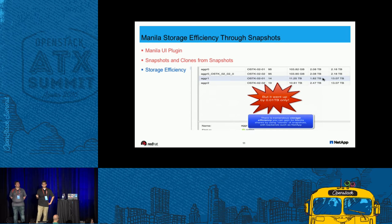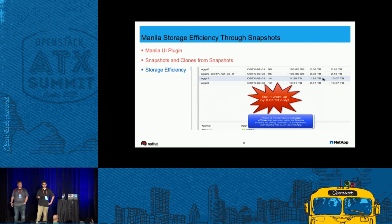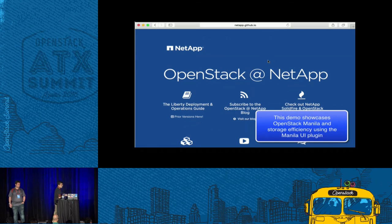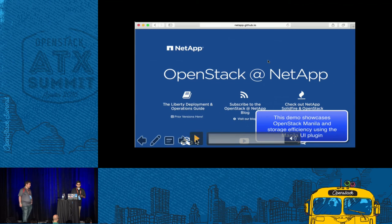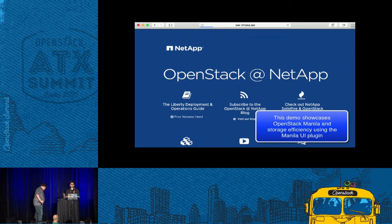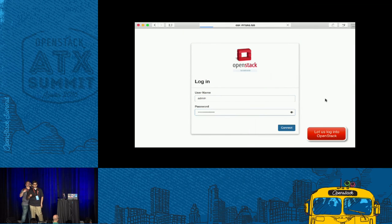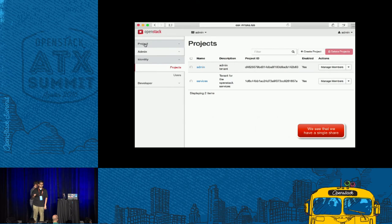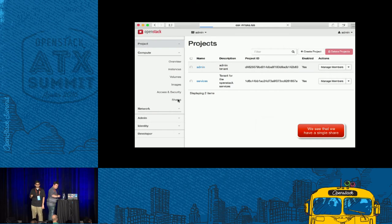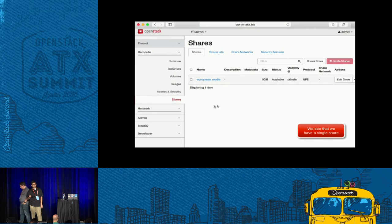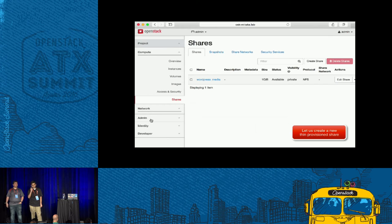We're going to create a new share with a large amount of data and see that it consumes nearly zero space. This is Horizon, we're logging in, and we've got the Manila UI plugin enabled. We go to the Shares tab, which is enabled by the plugin. We see that it's got one share. What we want to do is create a new share type that's going to allow thin provisioning — a feature that some enterprise storage backends offer.